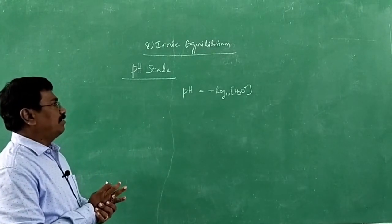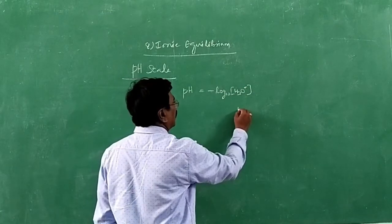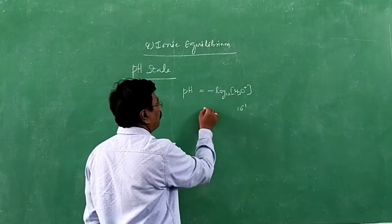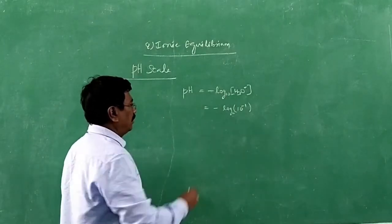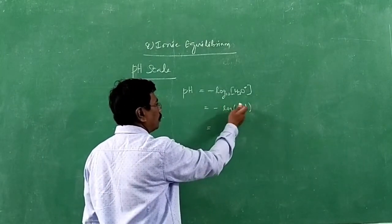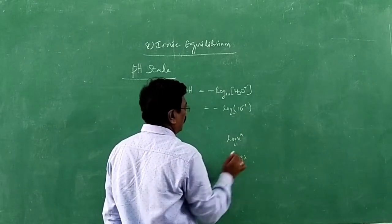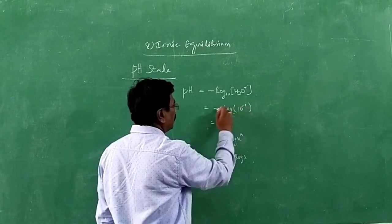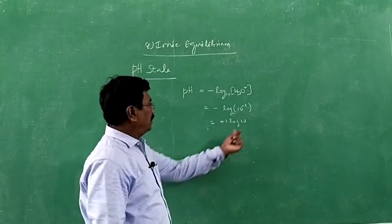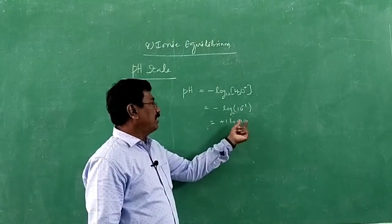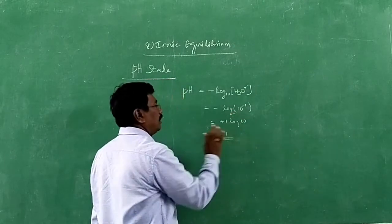Suppose the concentration of hydrogen ion is 10⁻¹. Then pH equals minus log₁₀(10⁻¹). Using the formula log(xᵃ) = a·log(x), the minus 1 comes to the front giving minus × minus = plus 1 × log 10. Since log 10 = 1, pH equals 1. So we get a simple number.